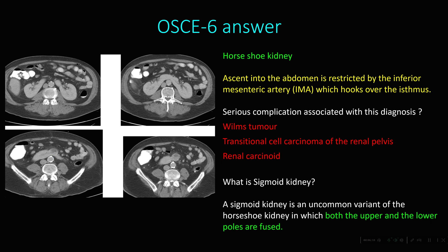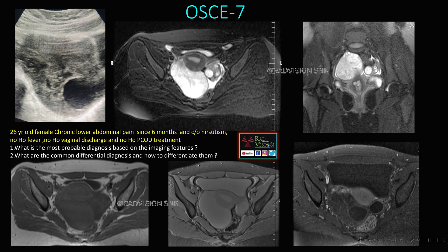A sigmoid kidney is an uncommon variant of horseshoe kidney in which both upper and lower poles are fused. Next, here you can see a 26-year-old female with chronic lower abdominal pain for six months, complaints of hirsutism, no fever, no vaginal discharge, and no PCOD treatment. The right ovary is completely enlarged with peripherally placed dilated follicles.